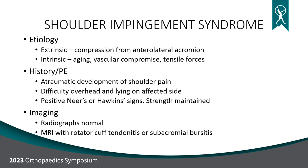For impingement, most patients describe pain developing without traumatic injury — pain on the outside, difficulty overhead, difficulty lying on that side. They'll have positive Neer and Hawkins signs, but most of the special tests for individual tendons are negative. X-rays are typically normal, and MRI might show some bursitis or rotator cuff tendonitis but no definitive tear.